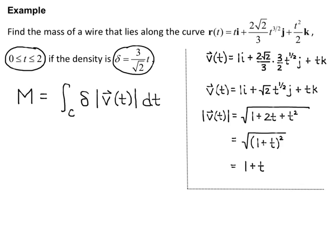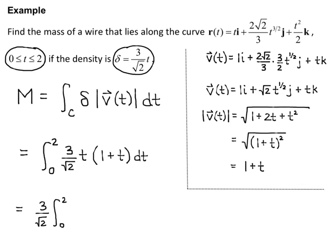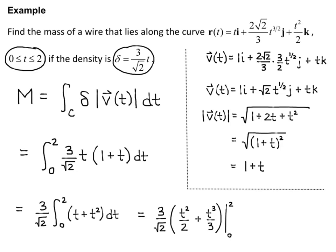The mass equals the line integral over curve C of delta times the magnitude of velocity times dt. With bounds 0 to 2, we have the integral from 0 to 2 of (3/√2)·t times (1 + t) dt. Pulling out the constant 3/√2, we integrate t + t² from 0 to 2, giving 3/√2 times [t²/2 + t³/3] evaluated from 0 to 2.